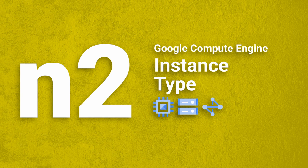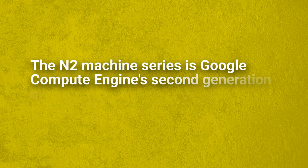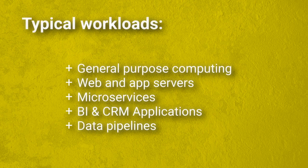Google Compute Engine N2 instance type. The N2 machine series is Google Compute Engine's second generation of general-purpose machines. Typical workloads include general-purpose computing, web and app servers, microservices, BI and CRM applications, and data pipelines.